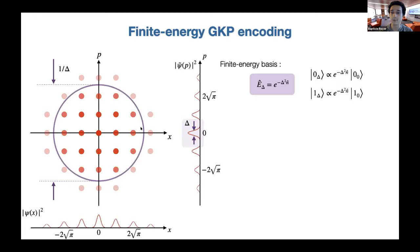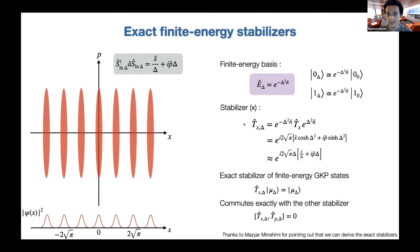The usual way finite-energy GKP states are defined is from the ideal state to which we apply an envelope operator that reduces the amplitude of states far from the origin in phase space. We define the |0⟩ and |1⟩ logical codewords of the finite-energy code this way. The codewords, instead of being infinitely sharp peaks, acquire a finite width Δ, and the envelope width is 1/Δ. In the limit Δ→0 we recover the ideal code. These finite states are not exactly +1 eigenstates of the ideal stabilizer, so we introduce finite-energy stabilizers via a similarity transformation of the ideal stabilizer.